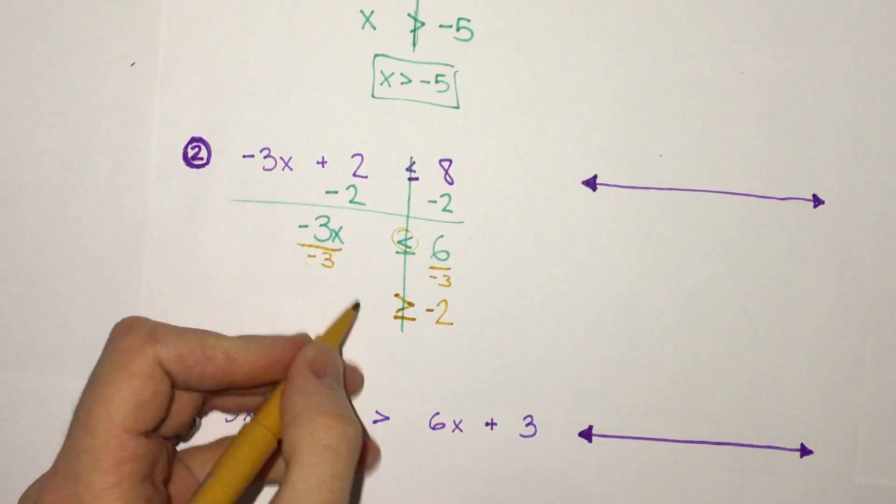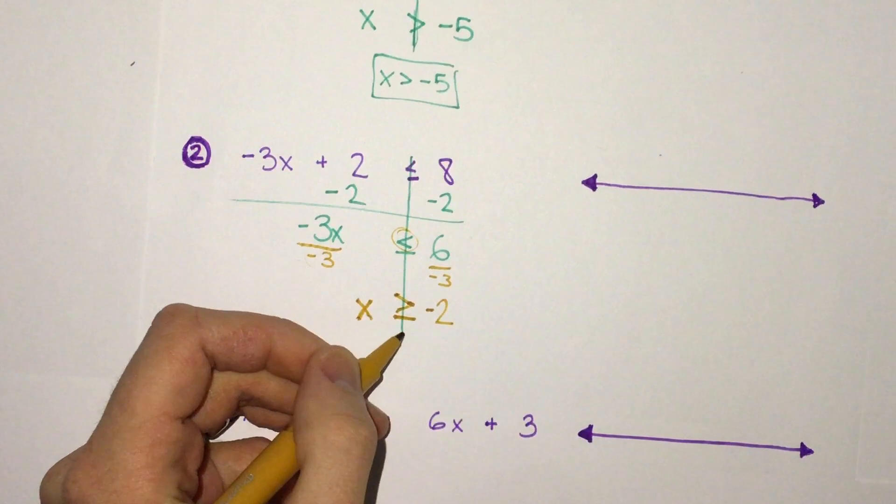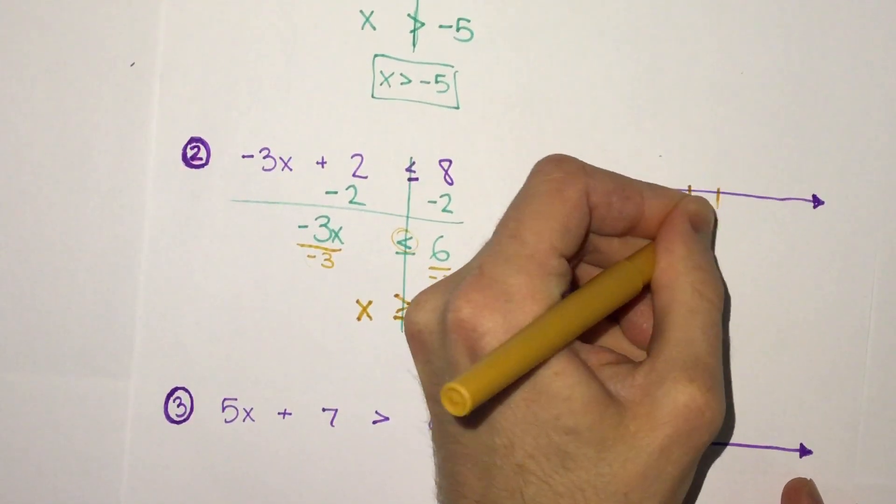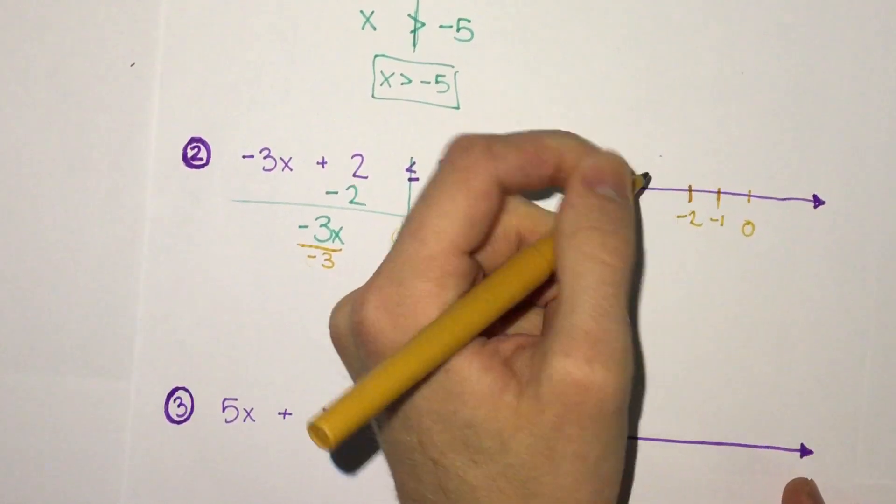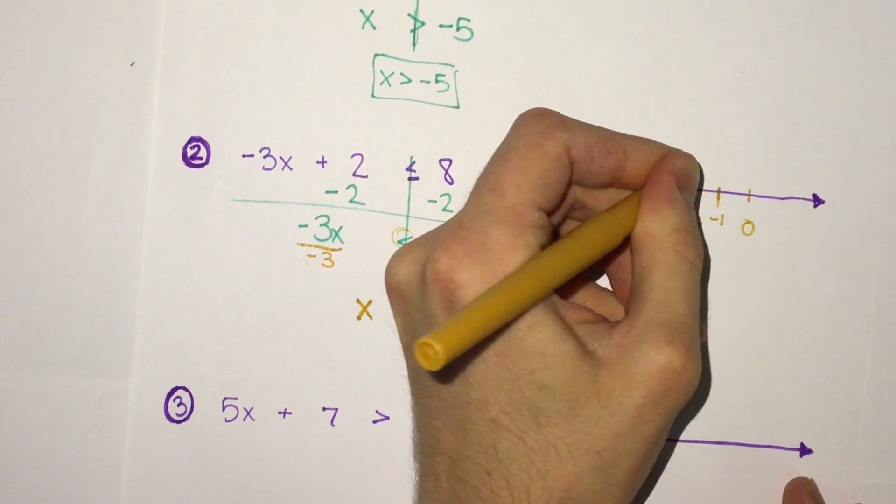Negative 3 divided by negative 3 is 1, so we get 1x. x is greater than or equal to negative 2. Then graphing is like normal. We take that it's equal to negative 2, so a solid dot, and greater than so going to the right. That would be our answer there.